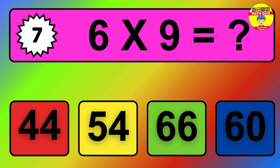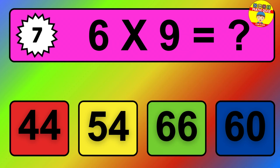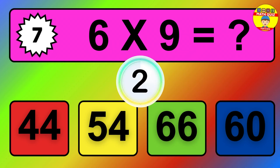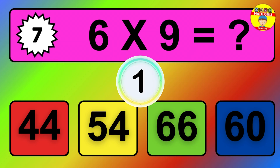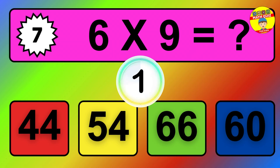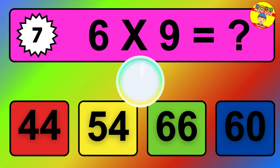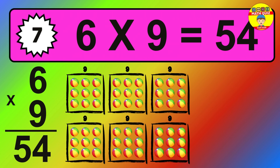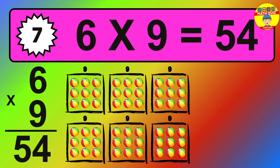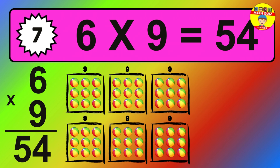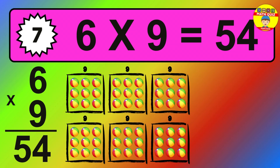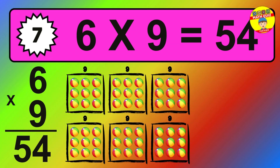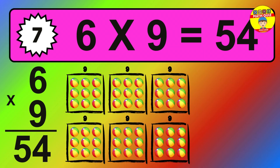Question seven: six times nine equals what? The answer is: six times nine is fifty-four. To calculate, we have six groups with nine balls each one. So how many balls do we have? Fifty-four balls.